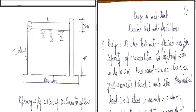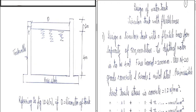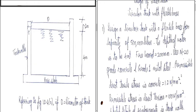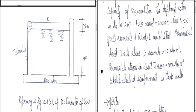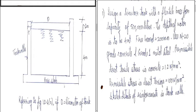The question is: design a circular tank with a flexible base for a capacity of 5 lakh liters. The depth of water is 4 meters, freeboard 200 mm, use M20 grade concrete and Grade 1 mild steel. The permissible direct tensile stress in concrete is 1.2 N/mm², permissible tensile stress in steel is 100 N/mm². Also sketch the reinforcement details.